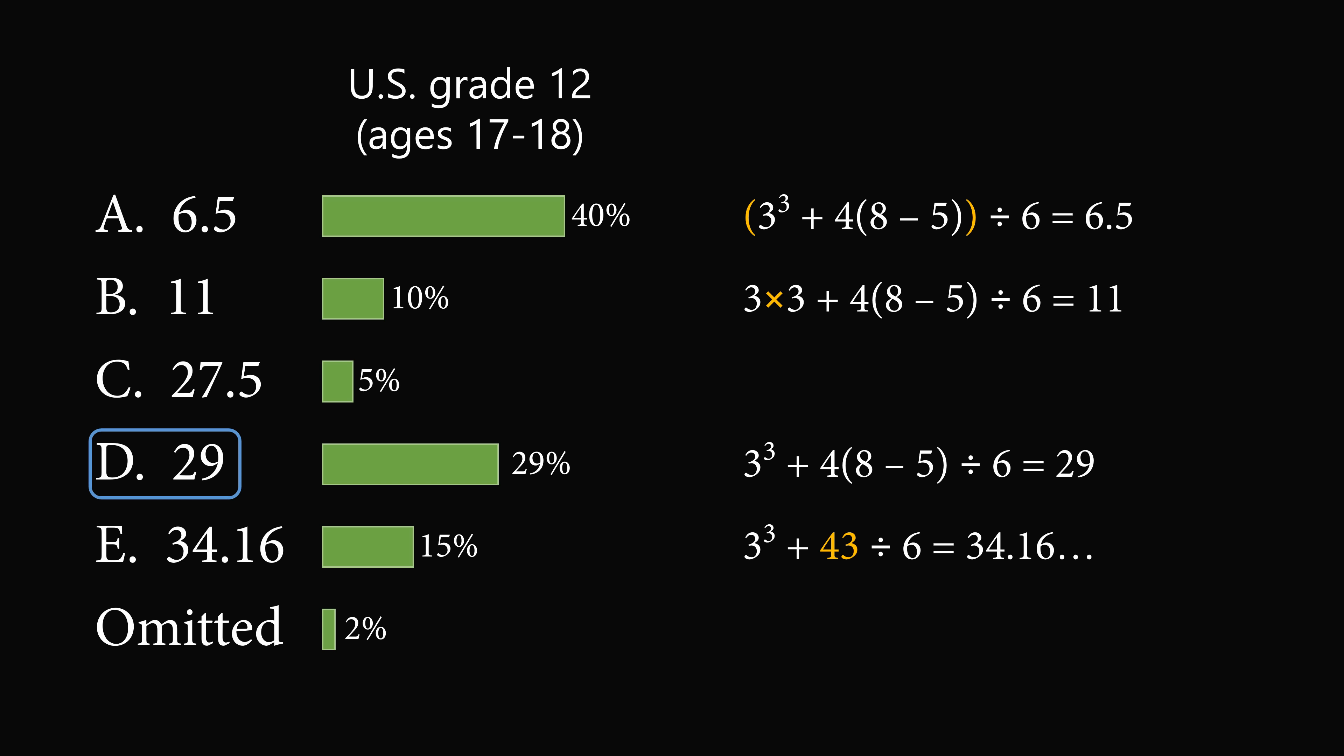The next common mistake was by taking 3 times 3, instead of 3 to the power of 3. The final mistake was by omitting the 4 before the parentheses.